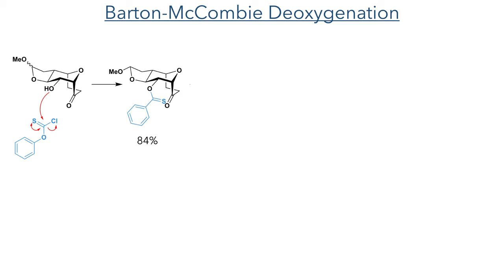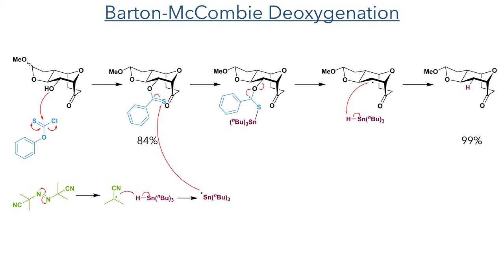The remaining hydroxyl group was then removed using a Barton-McCombie deoxygenation. Phenylchlorothionoformate was reacted with the molecule to form the thionoester in an 84% yield. To this was added a mixture of AIBN and tributyltin hydride. AIBN fragments to form a radical which adds to the tin hydride species to form a tin radical. This radical then adds to the sulfur group and the resulting intermediate undergoes a fragmentation, producing a thioester upon cleavage of the carbon-oxygen bond. The resulting radical then extracts a hydrogen atom from a further equivalent of tin hydride to regenerate the tin radical, producing the deoxygenated product in a 99% yield.